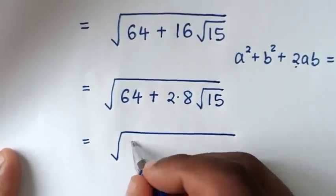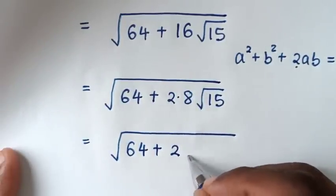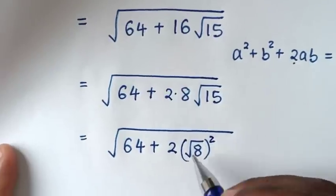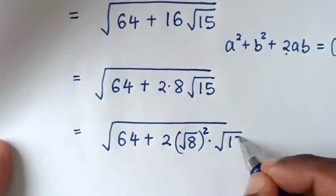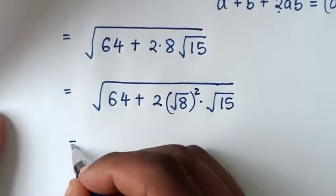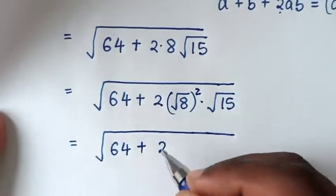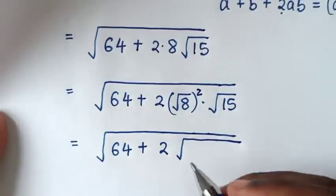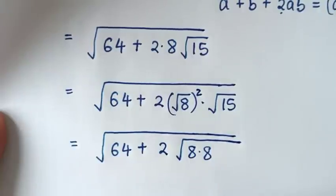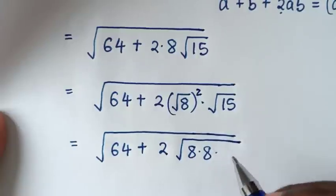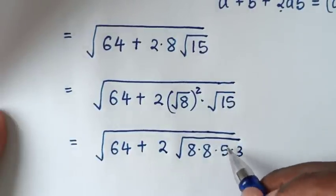Then it will be equal to square root of 64, then it will be 8, then times square root of 15. Then it will be equal to square root of 16, then of 64, then plus 2 into — it will be common square root of 8, then from here square root of 15, which is the same as times square root of 5 times square root of 3, since 5 times 3 is 15. So it will be square root of 5 times square root of 3.